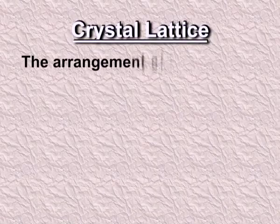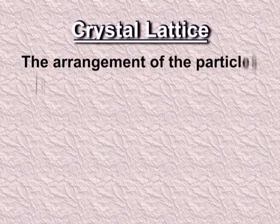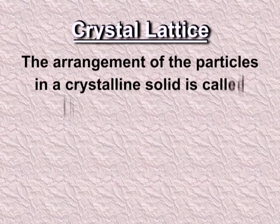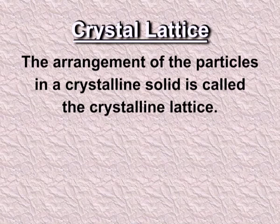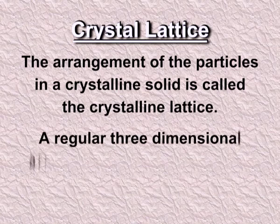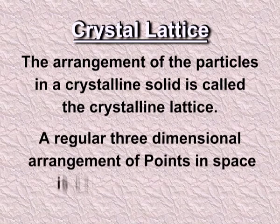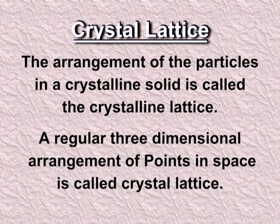Let's see what is a crystal lattice. The arrangement of the particles in a crystalline solid is called the crystalline lattice. A regular three-dimensional arrangement of the points in the space is called a crystal lattice.